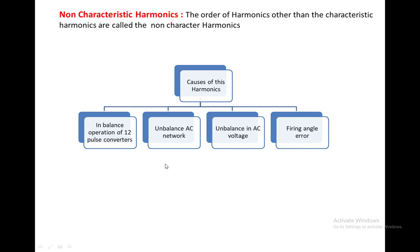Another cause is an unbalanced AC network. Each converter feeds power through a transformer, and a difference in the leakage reactance of the transformers generates non-characteristic harmonics. Also, because of unbalanced AC voltage, non-characteristic harmonics will be generated. The last cause is firing angle error — if there is a firing angle error between the two converters or within a single converter, non-characteristic harmonics will be generated.